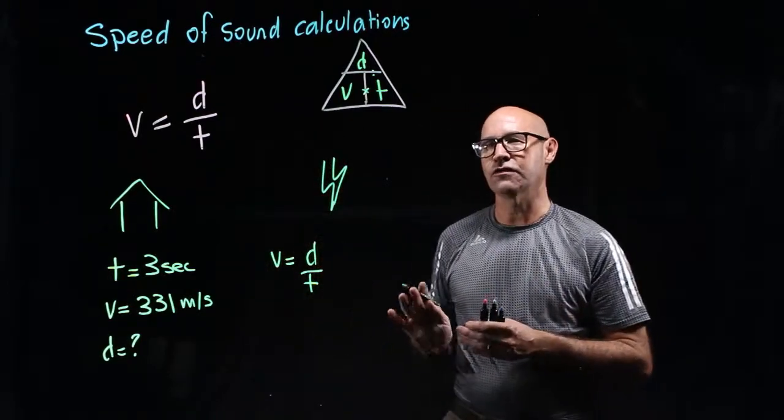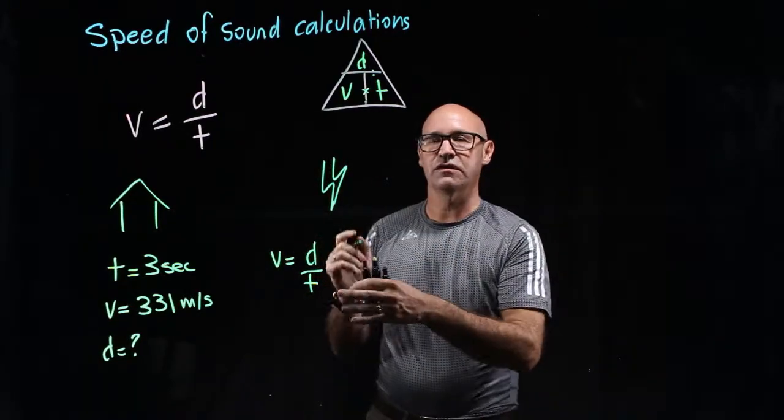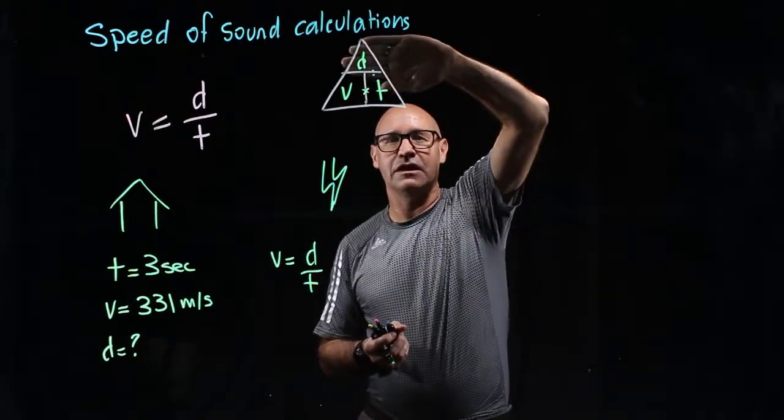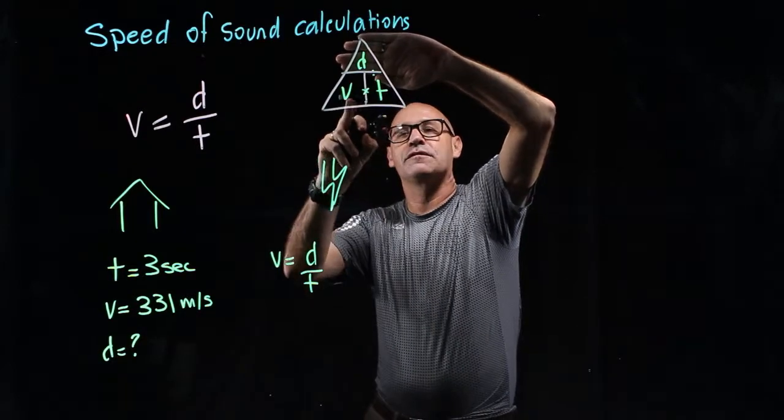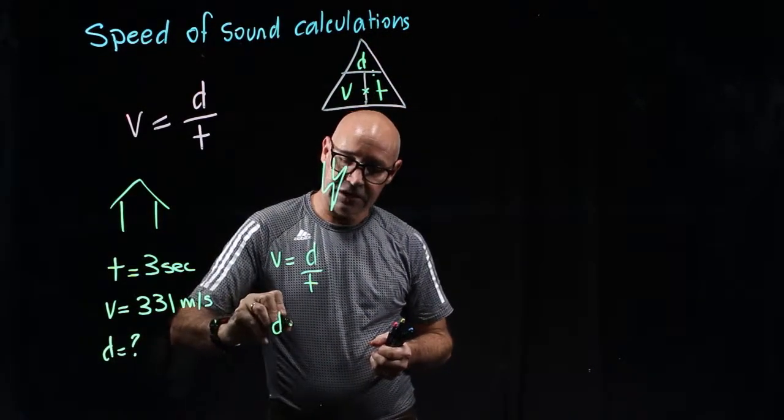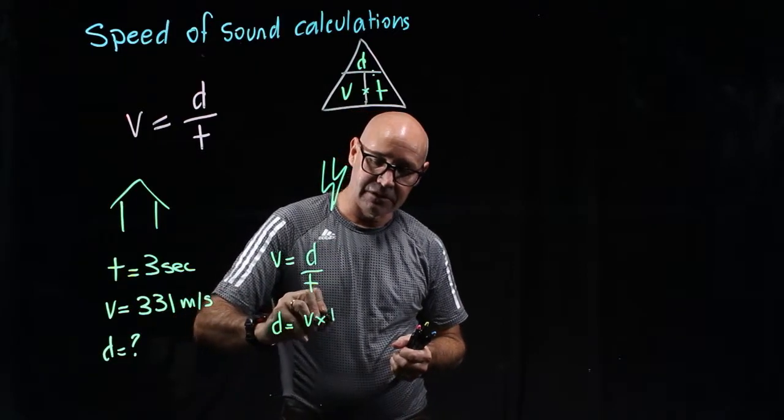Now, what we need to do this time is we need to manipulate the equation so D is by itself. So, the way we do that is, so D, cover that one up because we want that by itself, and we've got V times T. So, D equals V times T.